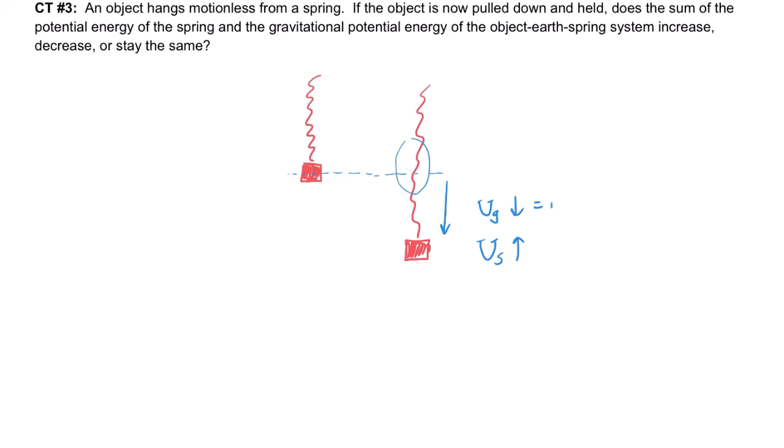Remember, gravitational potential energy depends on mgh. So, as I move it down, I'm moving it down a certain distance. That's going to change this value. It's a linear relationship with the gravitational potential energy. What about the elastic potential energy? That depends on one-half kx squared.